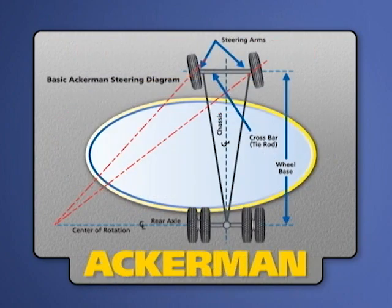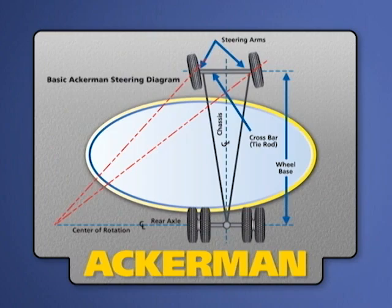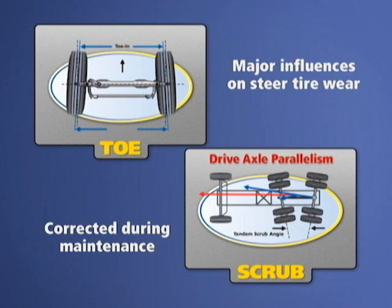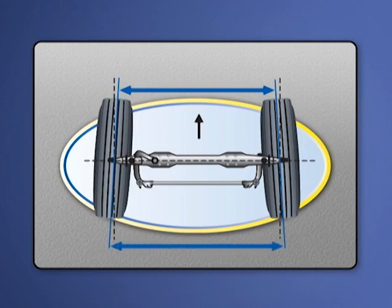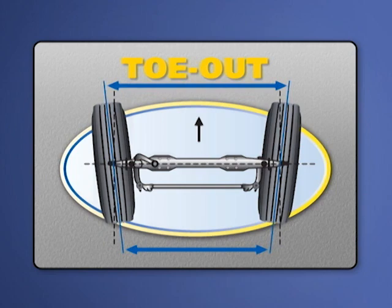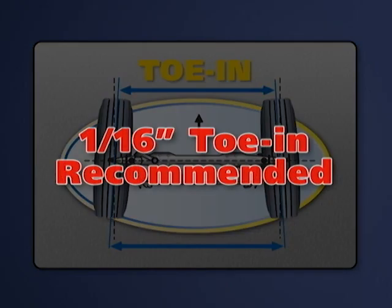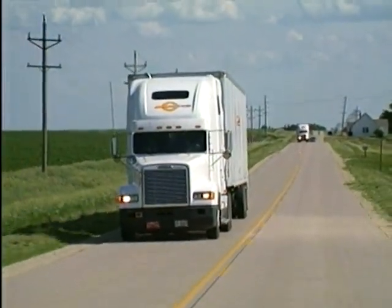Although all have some influence on tire performance, caster is primarily a handling factor, and camber and Ackerman can only be corrected by major component replacement. Thus, this video will concentrate on toe and drive axle parallelism, which are the two major influences on steer tire wear and can be easily corrected on most vehicles during normal maintenance services. Toe is the measurement of the relative distance between the front of the tires and the distance between the rear of the tires. Toe in occurs when the front distance is less than the rear distance. Toe out occurs when the front distance is greater than the rear distance. The Technology and Maintenance Council standard is a setting of 1/16th of an inch toe in to achieve optimum tire wear and vehicle handling. Since steering tires are forced outward during vehicle movement, a slight toe in is desirable to keep the steering tires in the optimal position.